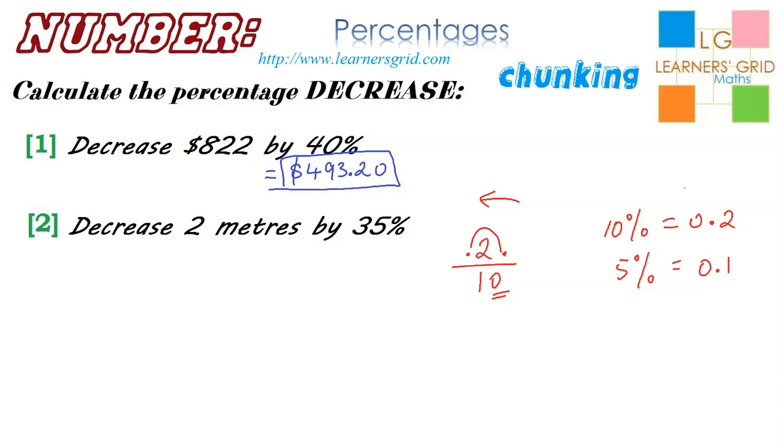Okay, so if I'm going to need 35%, that means I need three 10% and one 5%. So, let's just write that up. I've got 0.2, 0.2, and 0.2. That's 30%. That's three lots of this, and 0.1. Add them all up, and I've got 0.7.